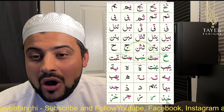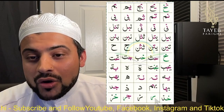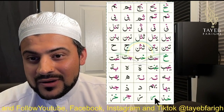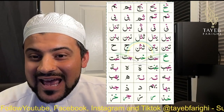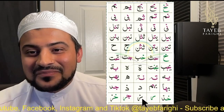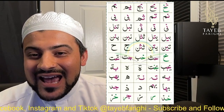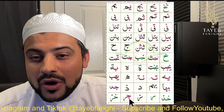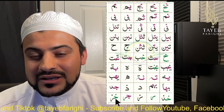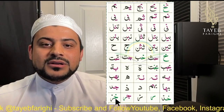Now in the last row, the tenth row: ha, dhal. Ra — look how ra looks different. Za — looks like lam. So ra, za. And then we have jeem, ra. Ha, za.